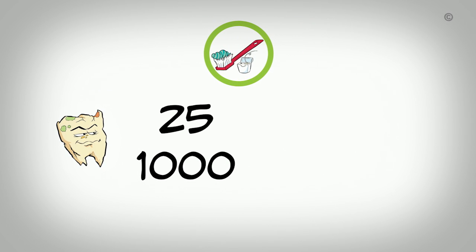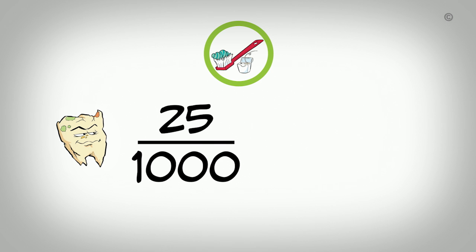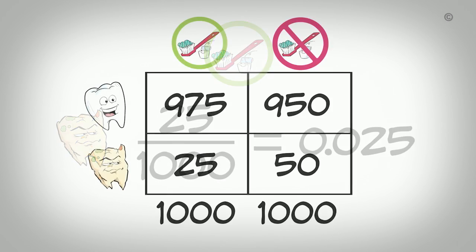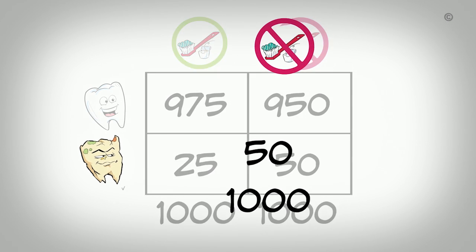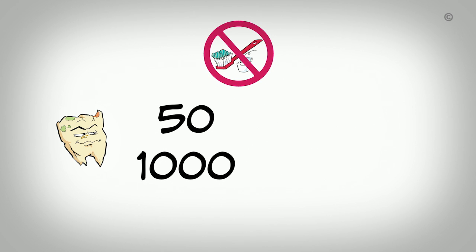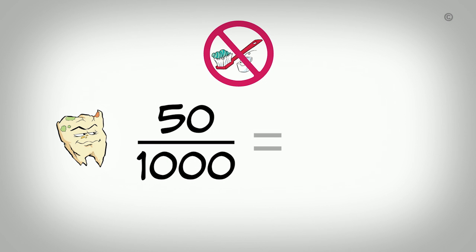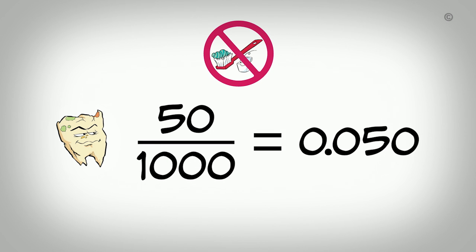The risk of dental caries in the group receiving the education is calculated by dividing the number with dental caries by the total number receiving the education, so 25 divided by 1,000 gives us a risk of 0.025. The risk of dental caries among children not receiving the education is calculated in the same way — we divide the number of children with dental caries in this group by the total number who do not receive the education, so 50 divided by 1,000, which gives us a risk of 0.05.